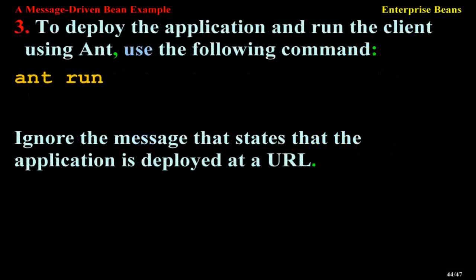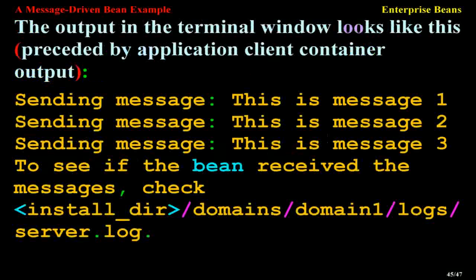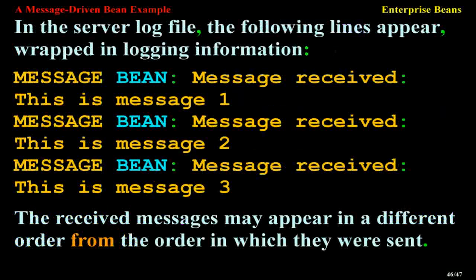To deploy the application and run the client, use the command 'ant run'. Ignore the message that states that the application is deployed at a URL. The output in the terminal window looks like this, preceded by application client container output: 'Sending Message: This is message 1', 'Sending Message: This is message 2', 'Sending Message: This is message 3'. To see if the bean received the messages, check the server log at install-dir/domains/domain1/logs/server.log.